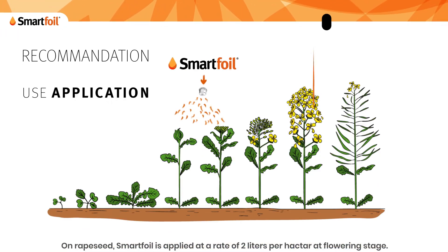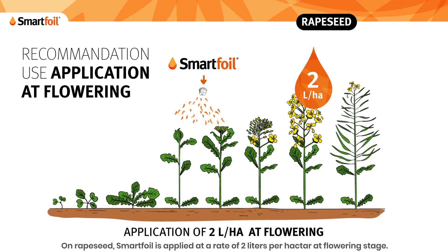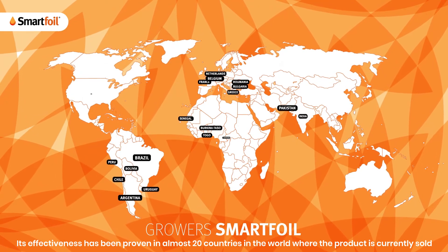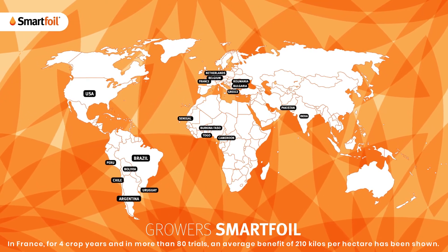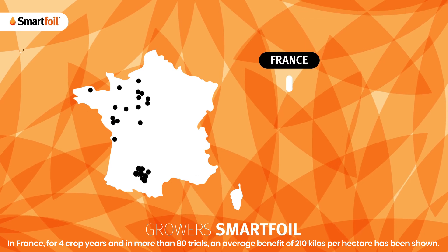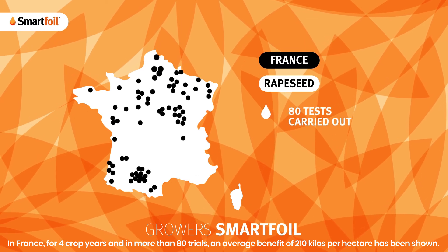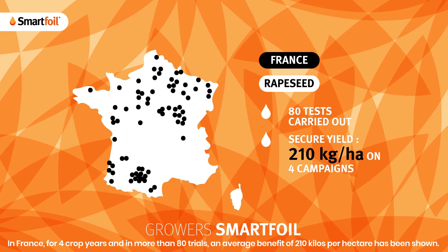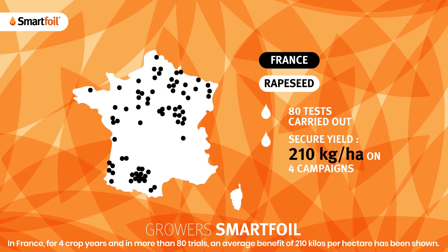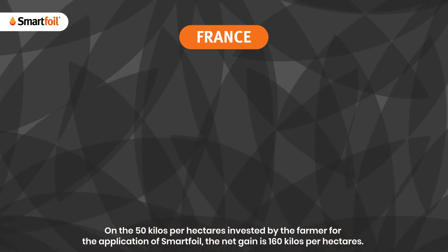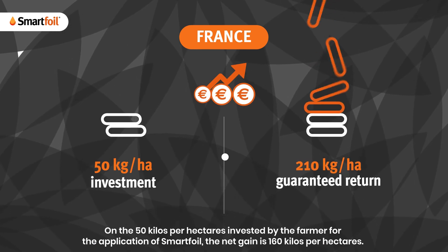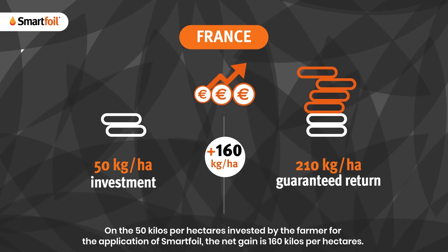On rapeseed, SmartFoil is applied at a rate of 2 liters per hectare at flowering stage. Its effectiveness has been proven in almost 20 countries in the world where the product is currently sold. In France, for 4 crop years and in more than 80 trials, an average benefit of 210 kilos per hectare has been shown. On the 50 kilos per hectare invested by the farmer for the application of SmartFoil, the net gain is 160 kilos per hectare.